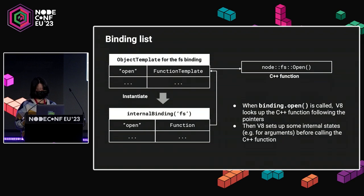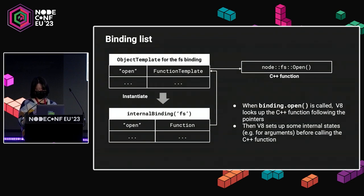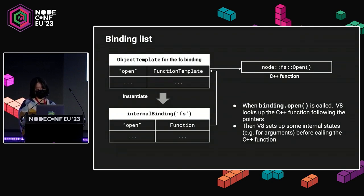Normally when we create the binding objects, what typically happens is that we create the object template for the binding object, which references many other function templates. When we instantiate an actual object from this template — when internal binding is called — and with any of the functions of these binding objects, for example open, gets called in the JavaScript land, V8 looks up the C++ function following the pointers here. It sets up some internal states — for example, putting the arguments together into a C++ structure — and then it will just invoke the C++ function.